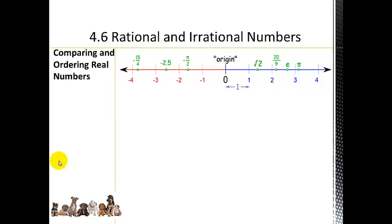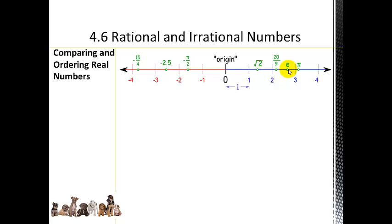Now let's look at comparing and ordering real numbers — both rational and irrational. You can list them and place them on a number line that goes to infinity in both directions, with an infinite number of values between each number. The number line can include decimals, improper fractions, irrational numbers like pi and Euler's number. Comparing means determining less than, greater than, or equal.